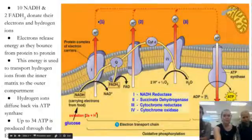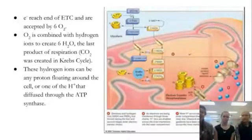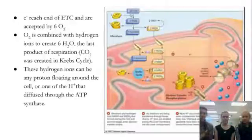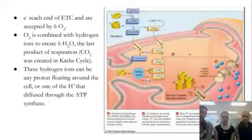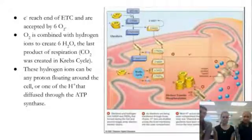After creating up to 34 ATP in the ETC, these are combined with the ATP created previously in glycolysis and the Krebs cycle, equaling up to 38 total ATP molecules. But we're not done yet — we still have all the electrons from the electron transport chain to handle. When the electrons reach the end of the chain, they're accepted by six molecules of oxygen.